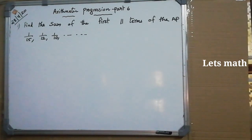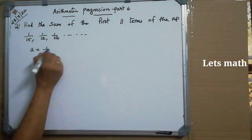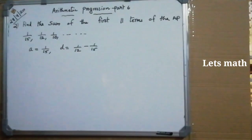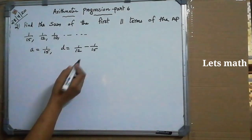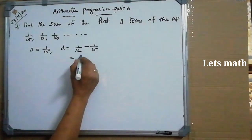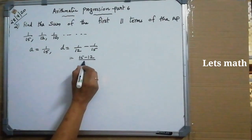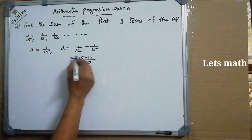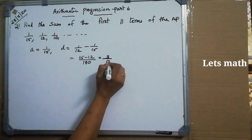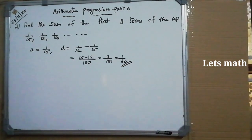Find the sum of the first 11 terms of the AP: 1/15, 1/12, 1/10, ... Here A = 1/15, and D = 1/12 - 1/15 = (15-12)/(12×15) = 3/180 = 1/60. Using Sn = N/2 × [2A + (N-1)D]: S11 = 11/2 × [2/15 + 10×(1/60)] = 11/2 × [2/15 + 1/6].